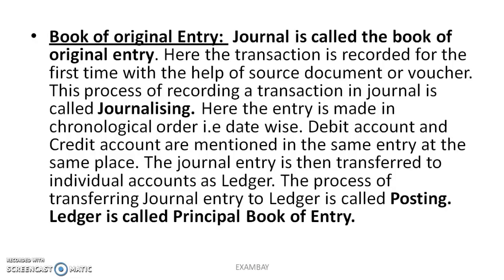So let's start. Journal is called the book of original entry. Why? Because when you have an accounting transaction or a company transaction, it is recorded first in the journal, with the help of source documents such as a bill, invoice, or voucher. This process is called journalizing. Journal is the first book of entry, or you can say the original book of entry.